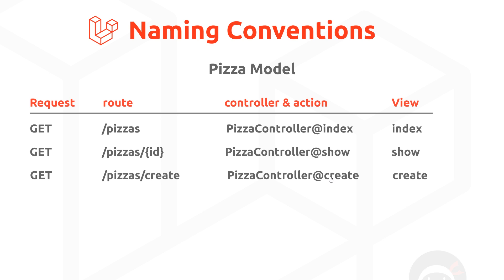The actions or methods inside that controller also follow a convention. We've got three examples here, but there are more. 'Index' would be used to show all of the records or a list of records. So when we go to forward slash pizzas in our app, we use the 'index' method to get a lot of records and index them on a page. The view we would use is often called 'index' as well — we'll change our current view name to follow this convention shortly.